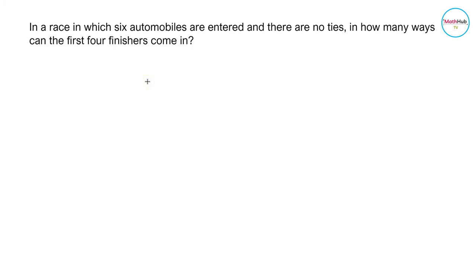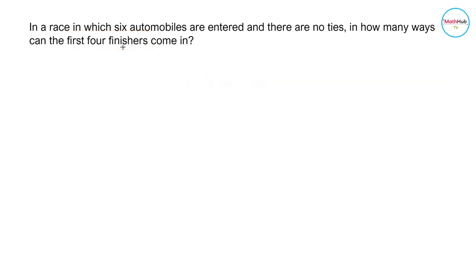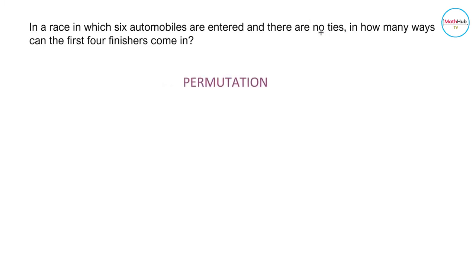In a race in which six automobiles are entered and there are no ties, in how many ways can the first four finishers come in? Note that there is a first, second, third, and fourth placer, and since there are no ties, no repetition is allowed. Therefore, this is a problem on permutation because order matters.